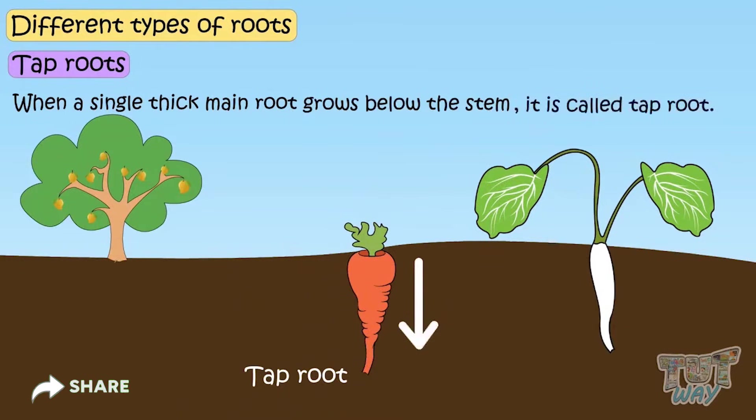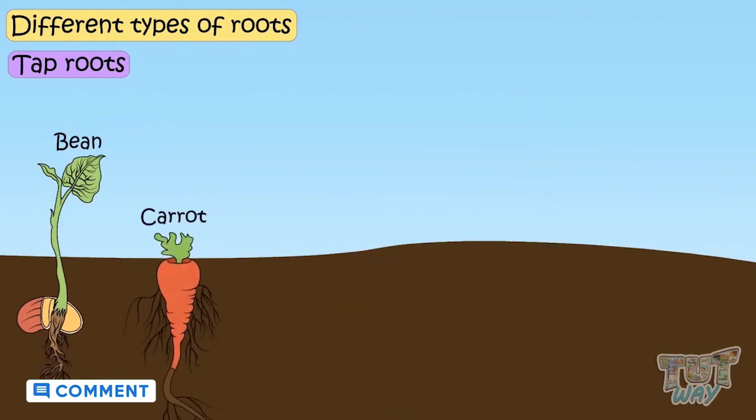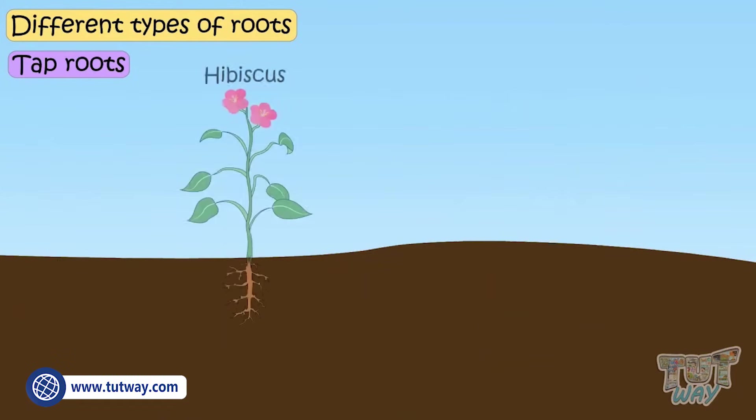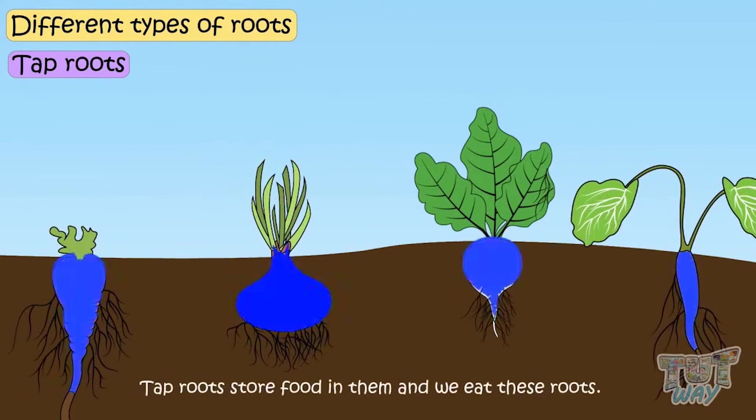Many thin roots, which are unequal in size, grow from this main root. Beans, carrots, mango, radish, rose, hibiscus and turnips are the plants that have tap roots. Tap roots store food in them and we eat these roots.